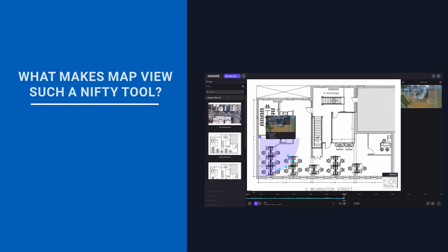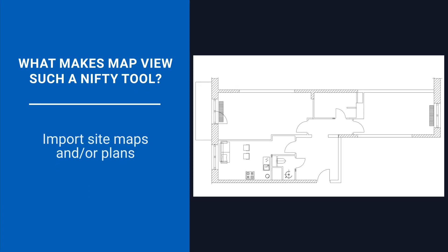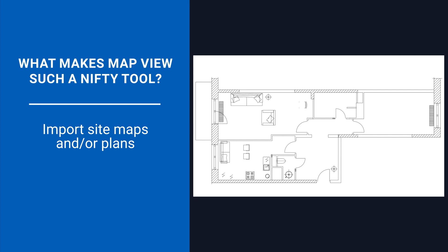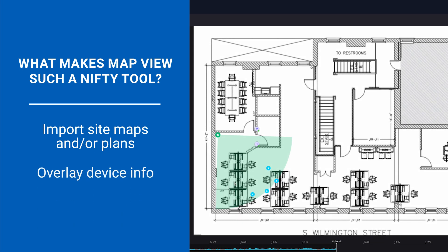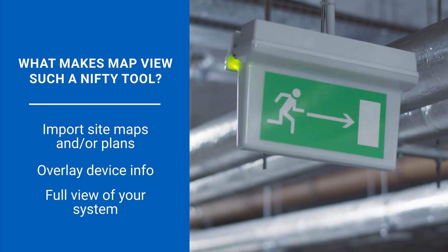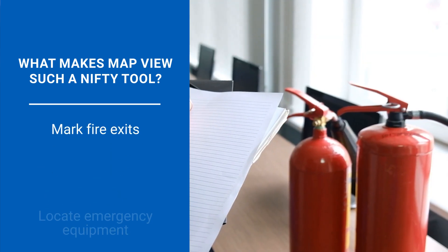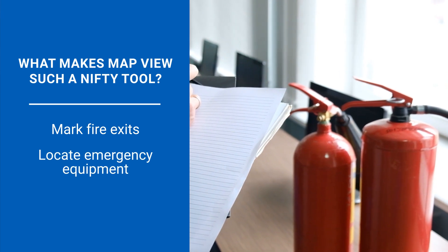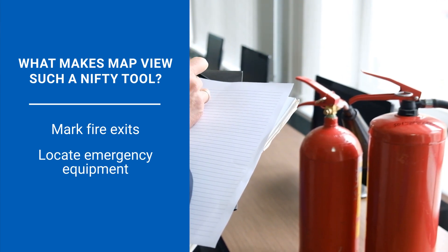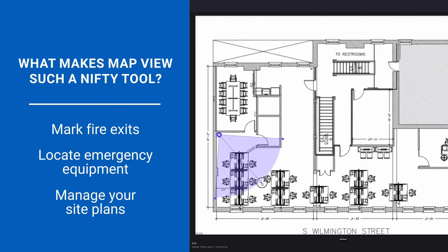What makes Map View such a nifty tool for you? With your custom Map View, you can now import site maps and plans into AltaAware, overlaying information about your cameras, their fields of view, and other important information about your site. You can identify the fire exits, locations of emergency equipment, sensitive areas, and other important features. You can link several smaller plans together to form a complete and detailed view of your premises.